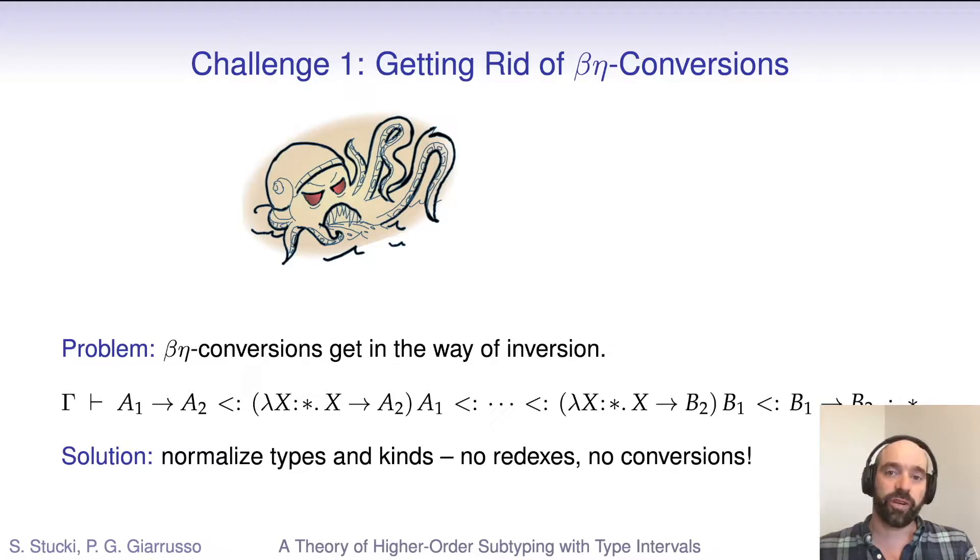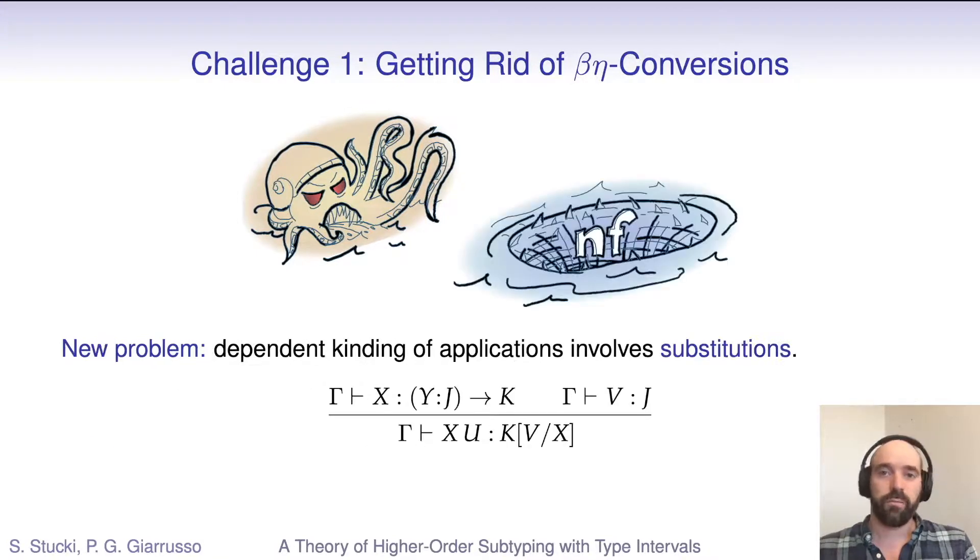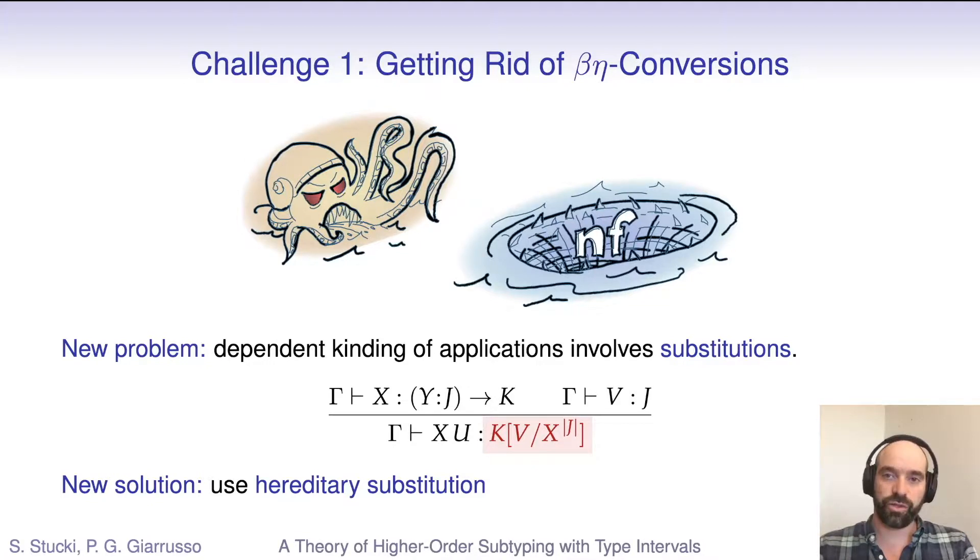We tame this monster by getting rid of redexes. We introduce a new canonical representation of subtyping, where all type expressions are in normal form, and so there are no redexes and no reductions. But this introduces a new challenge, because the canonical subtyping judgment requires that everything is in normal form, including kinds. And because we're in a dependently kinded system, kinding involves substitutions, and substitutions don't preserve normal forms. So consider what happens if we're trying to type the following application. We have a type operator that's abstract, it's just a type variable, and we want to apply it to another type that is in normal form. The kind of the resulting application is the codomain k with the normal form v substituted for x. Even if k was a normal form, the resulting kind expression with the substitution doesn't need to be. We solve this particular problem by using something called hereditary substitution for the canonical judgment. Unlike ordinary substitutions, hereditary substitutions beta reduce and eta expand their results. You can find the details in the paper.